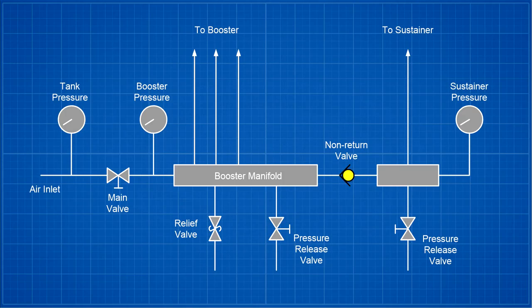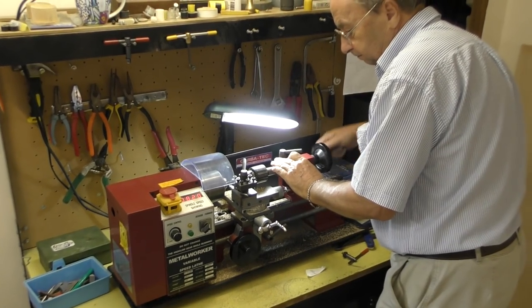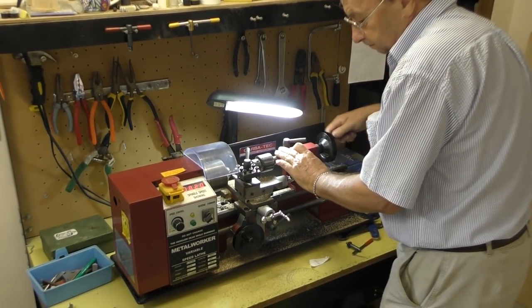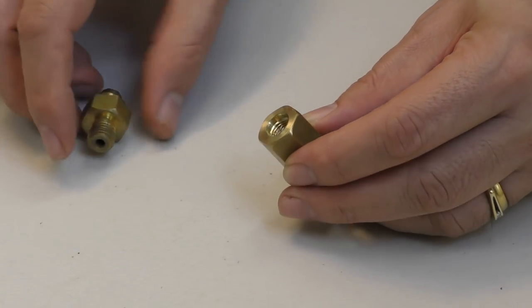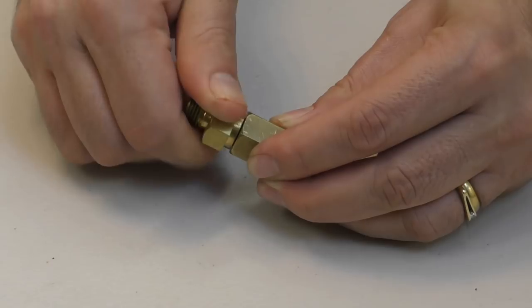The non-return valve prevents water from flowing from the sustainer back into the booster segments. It consists of a brass main body with a stainless steel seat and small spring to help it stay closed. The spring is then held in place with this nut.